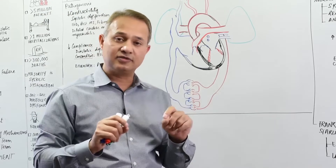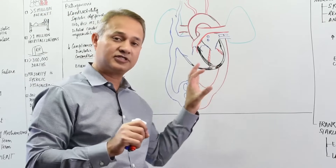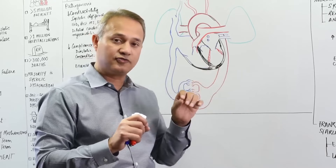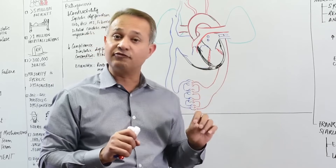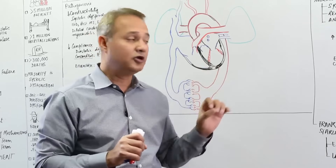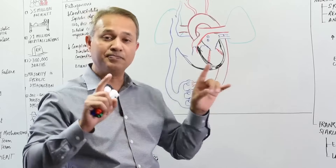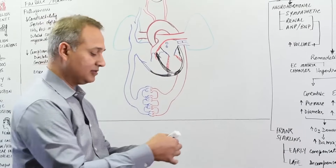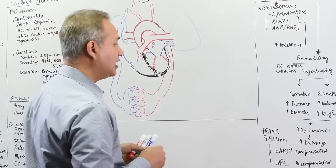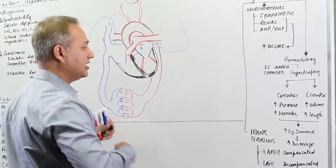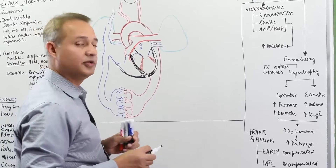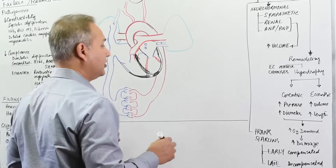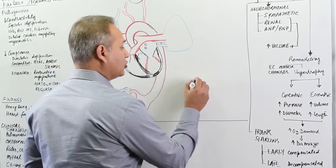Systolic versus diastolic is something that you have to understand not only for the left and right heart but also from cardiac output and ejection fraction point of view. Let's look at that mathematically as well, because this is something that is going to appear in your exams plus in your lab findings.